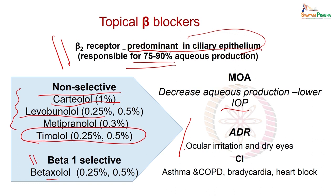Contraindications: all bronchial asthma patients, patients of COPD (chronic obstructive pulmonary disease), bradycardia, and heart block, because even the small quantity of beta blocker that enters the systemic circulation can precipitate bronchial asthma and can reduce the heart rate.